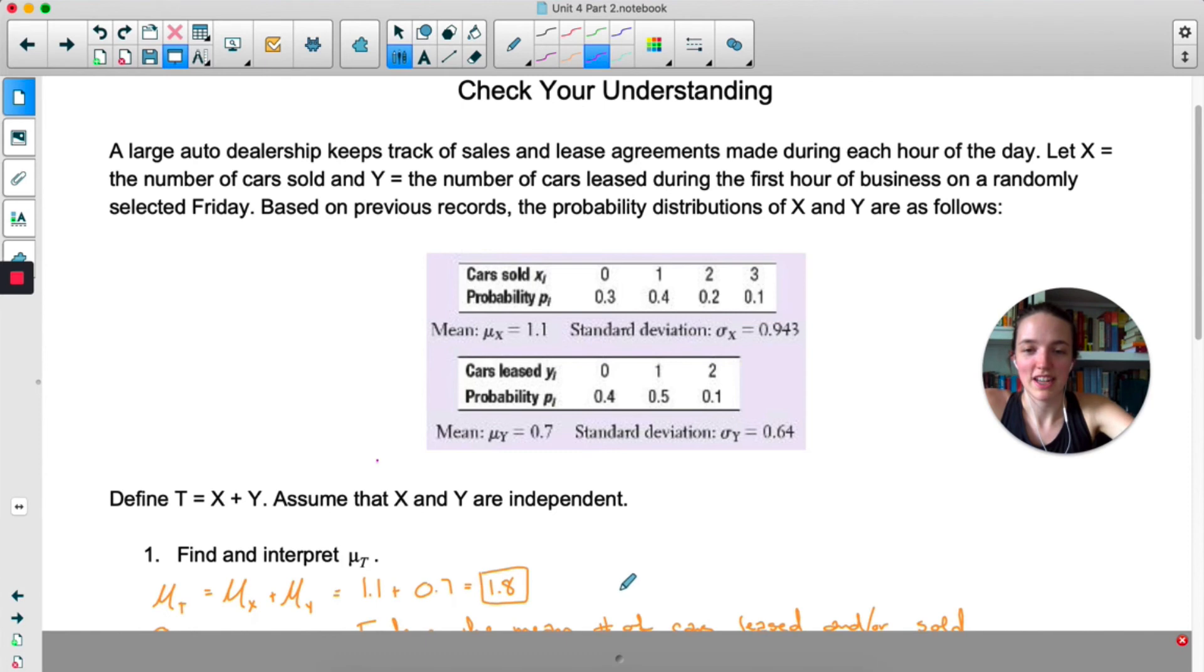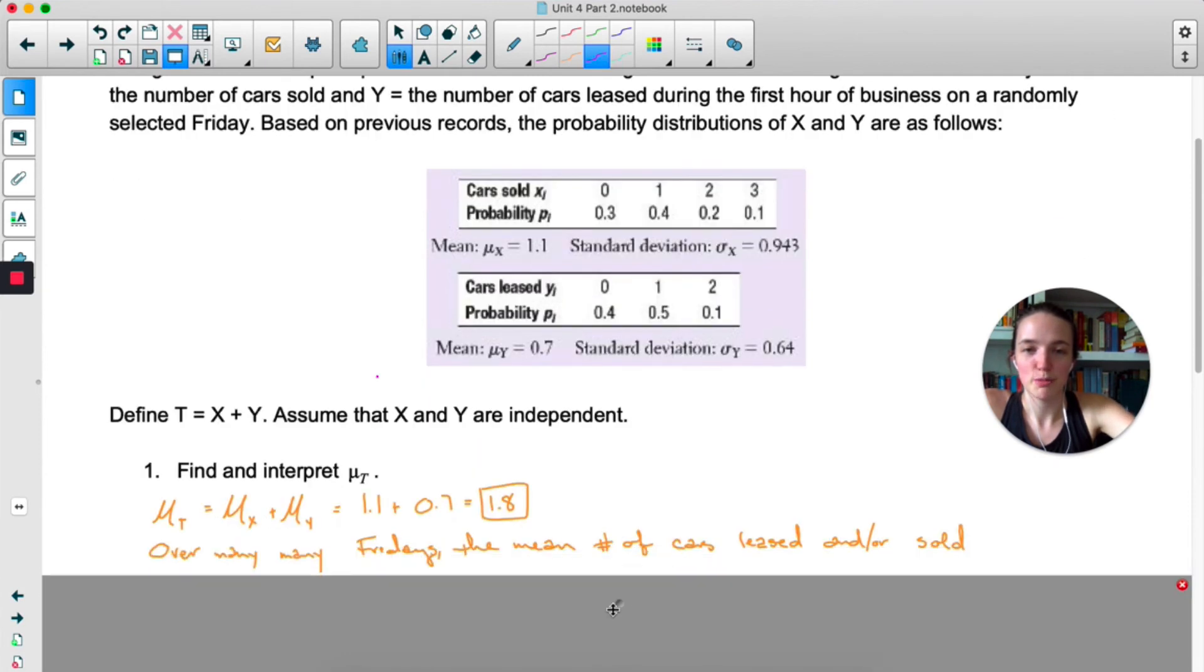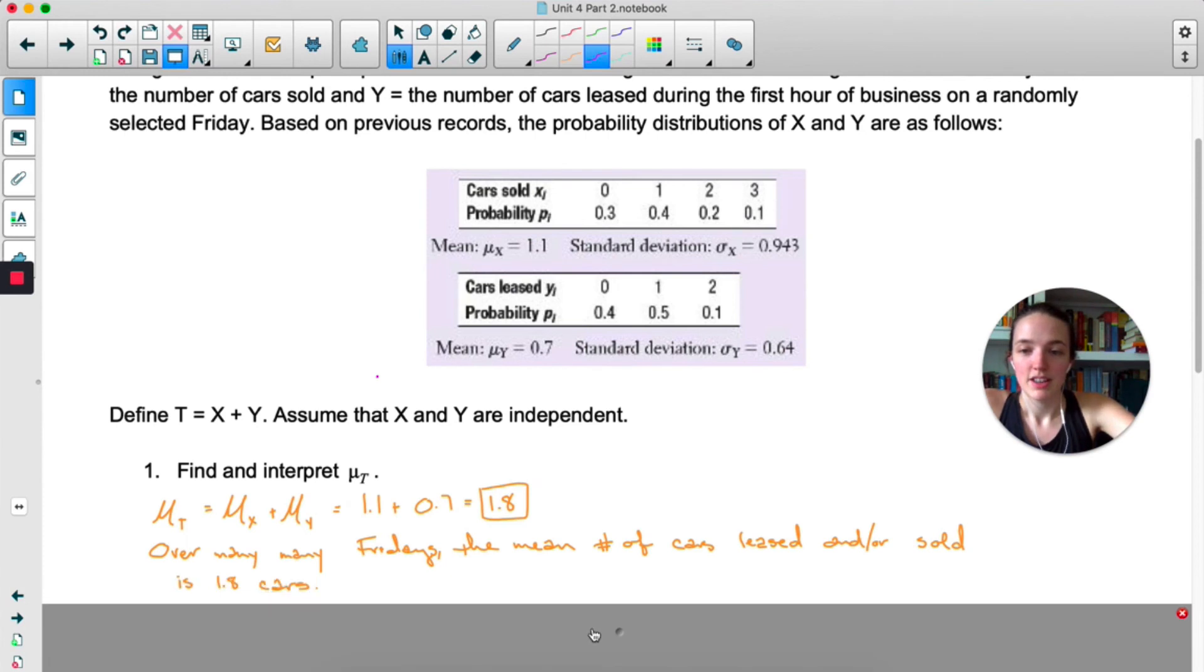Okay, so when we're adding X and Y we just add the means. So there our new mean is just 1.1 plus 0.7, which is 1.8. This is over many, many Fridays. We would expect them to sell slash lease about 1.8 cars, which I know doesn't actually make sense, but that's the mean so we're going to list it as the mean.